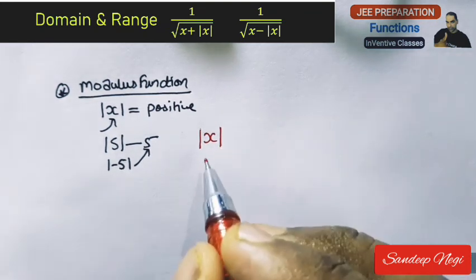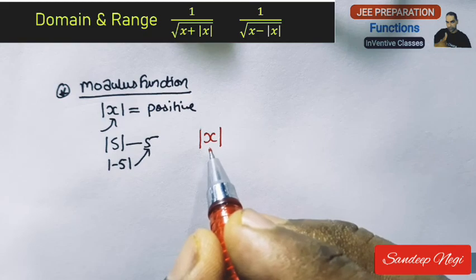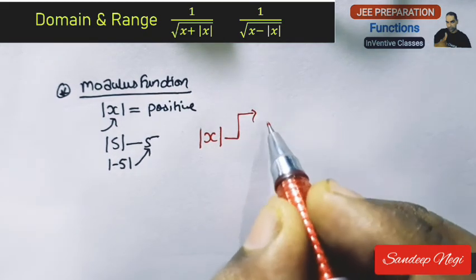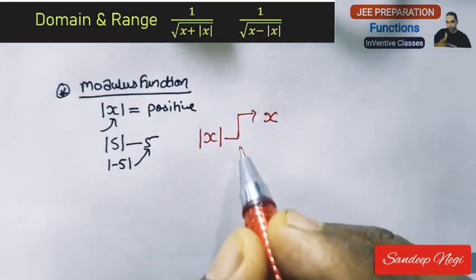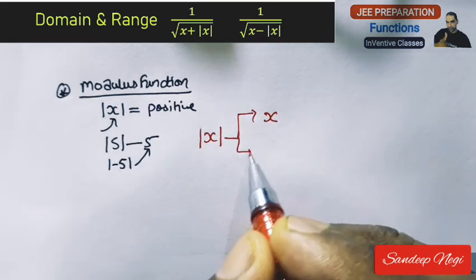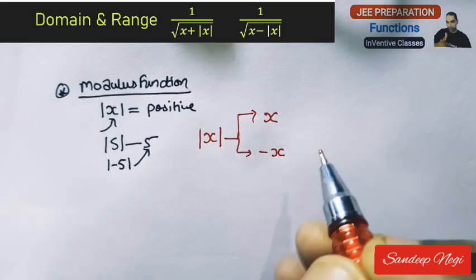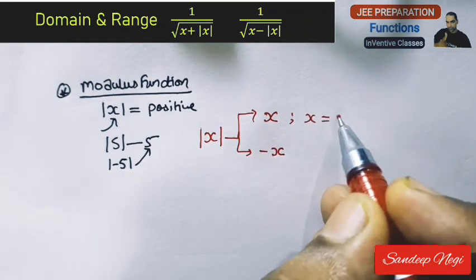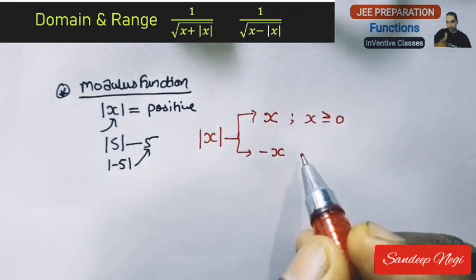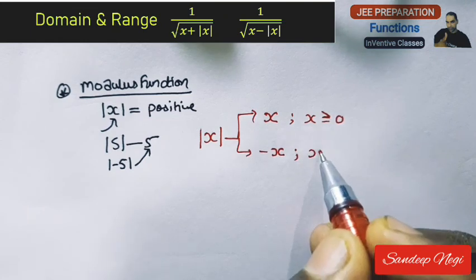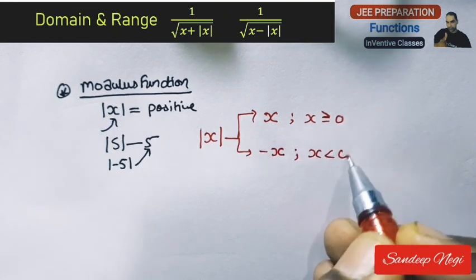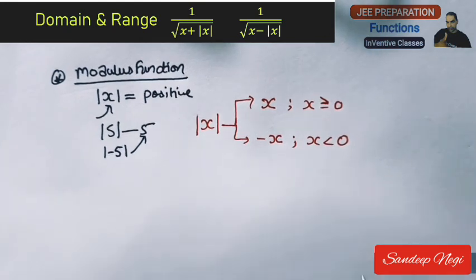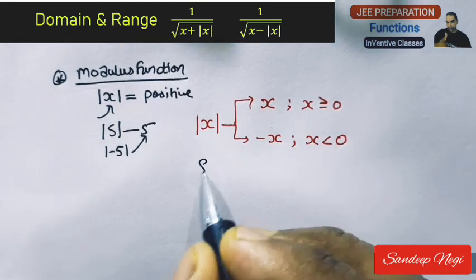The key feature of the modulus function is: if there is x inside the mod, then there are two values. One is positive x and one is minus x. It will be positive x when x is greater than or equal to 0, and it will be minus x when x is less than 0.